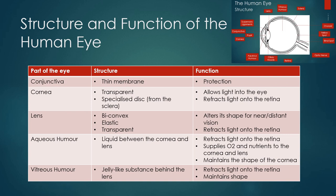Here I've listed the different parts of the eye with their structure and function, because this is what you need to know. The conjunctiva is a thin membrane, and it is for protection. The cornea is a transparent disc — because it is transparent, it allows light into the eye, and because it is specialized, it refracts light onto the retina.